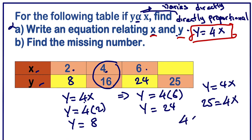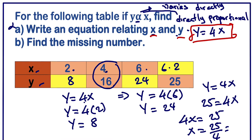So 4x equals 25, which means x equals 25 divided by 4. If we divide 25 by 4, we get 6.25. Thanks for watching, please subscribe.